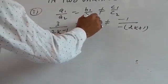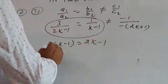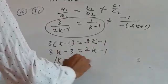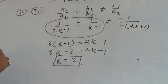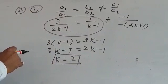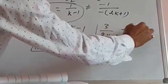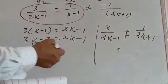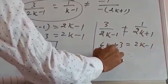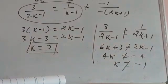Equating: 3(k−1) = 2k−1, which gives 3k − 3 = 2k − 1, so k = 2. This gives the no solution case. We also need to verify the third condition — checking that a1/a2 ≠ c1/c2: 3/(2k−1) ≠ 1/(2k+1), giving 6k + 3 = 2k − 1, so 4k = −4, meaning k ≠ −1. So k = 2 and k ≠ −1 are the conditions.